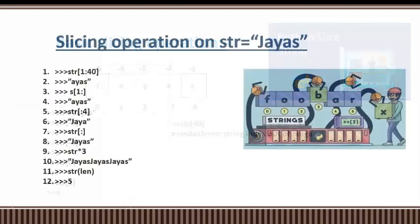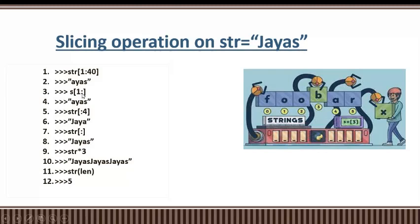For slicing operations on the string 'jayas': str[1:] reflects 'a', 'y', 'a', 's' — everything from index 1 onwards. str[1:] means from index one, it represents all characters like 'a', 'y', 'a', 's'. str[:4] represents characters from index zero up to but not including index four — that is three characters: indices 0, 1, 2, 3.